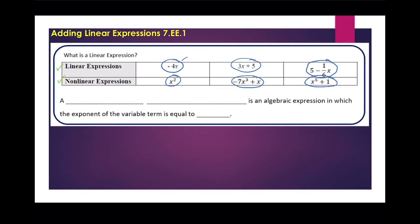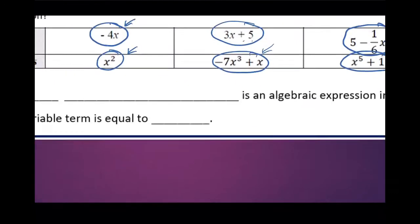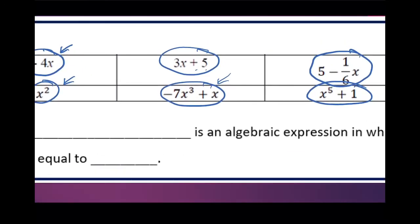Now this is negative 4x, and this is x squared. Is it because it doesn't have a coefficient in front of it? This is negative 3x plus 5, and then this one right here is negative 7x cubed plus x. Now what's a little bit different? Maybe it has something to do with that.